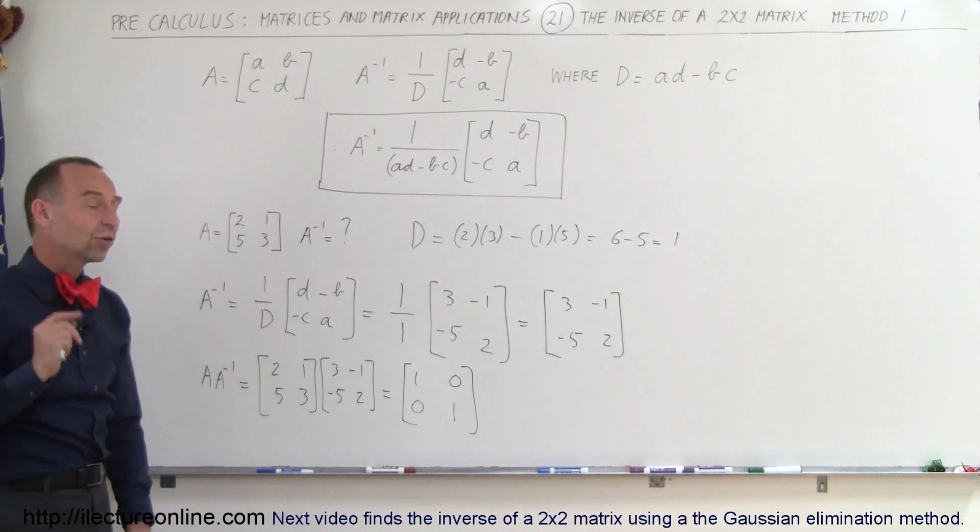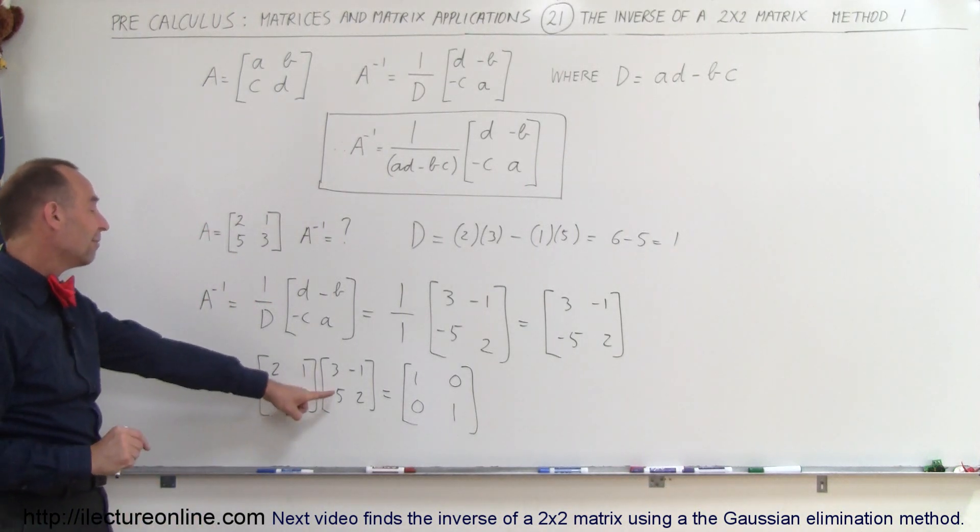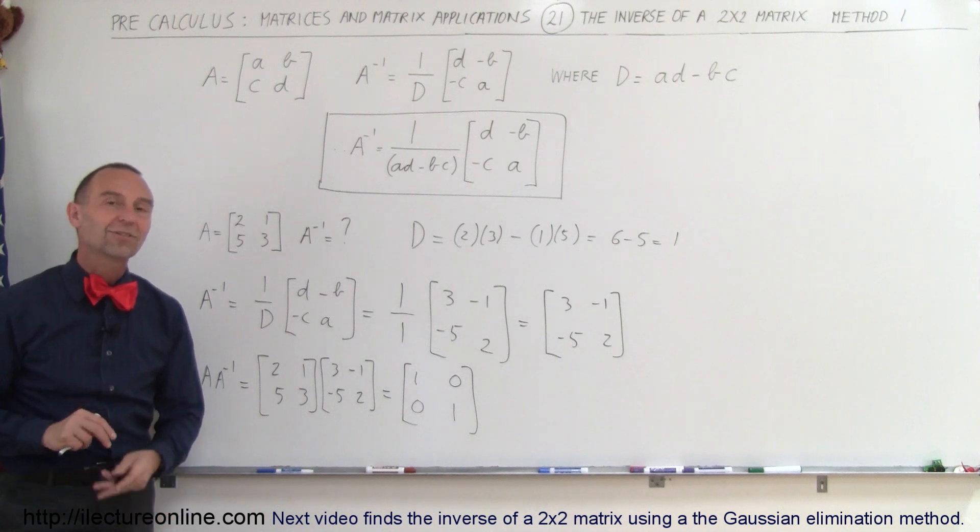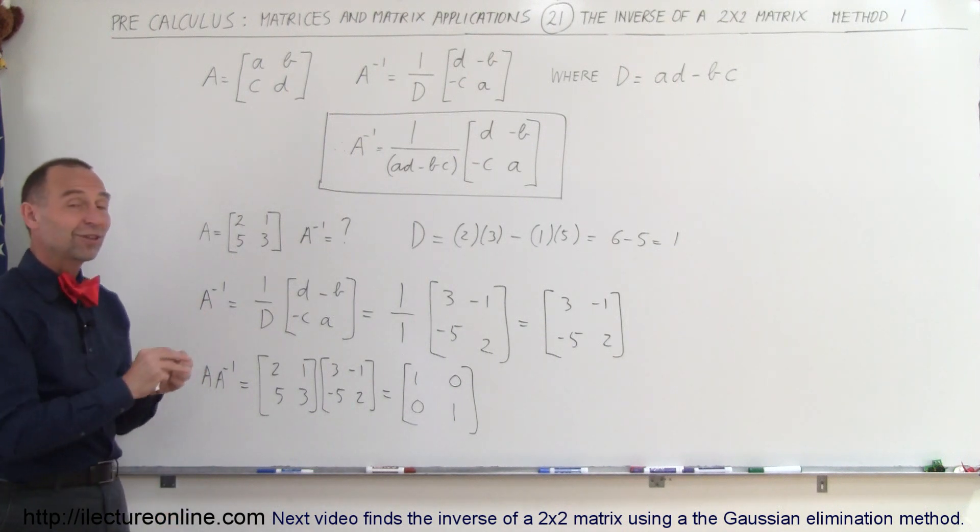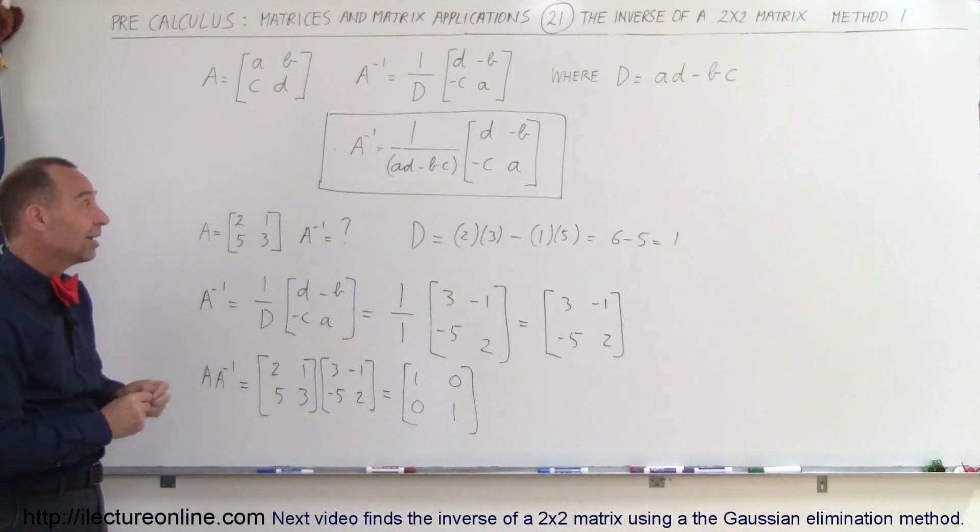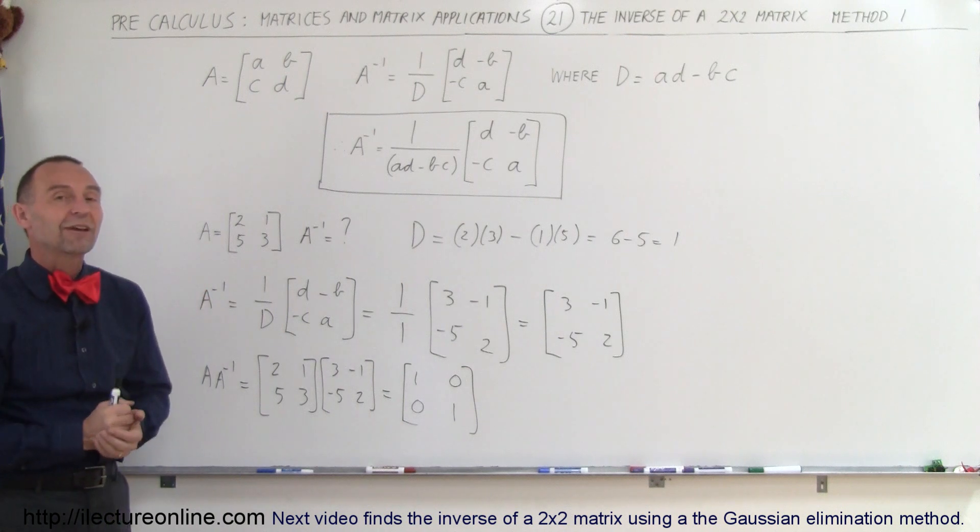There's the identity matrix that shows us that this is the inverse of the matrix A, and that's how we use this very interesting, very quick method, because actually this can be done fairly quickly if you have a 2 by 2 matrix.